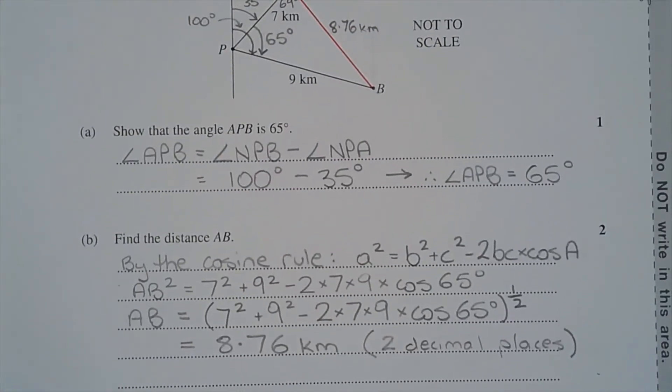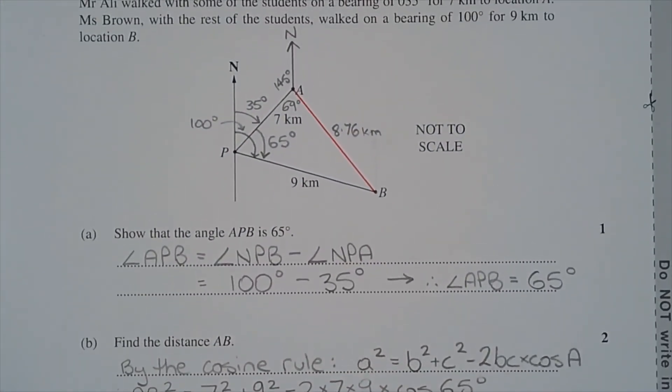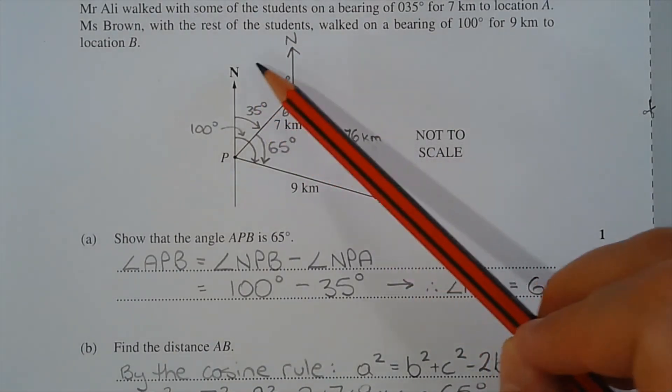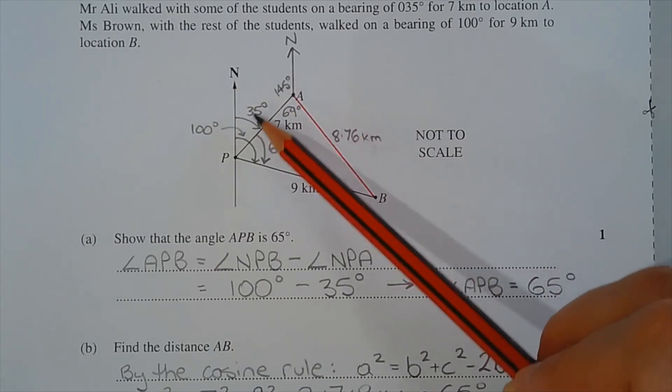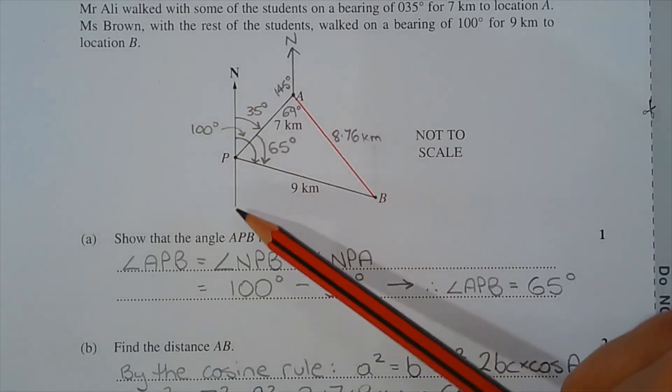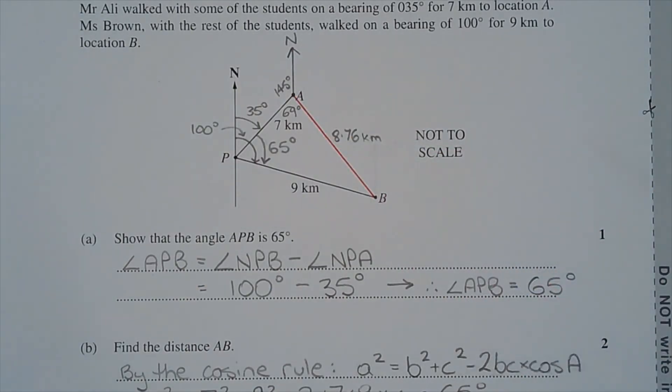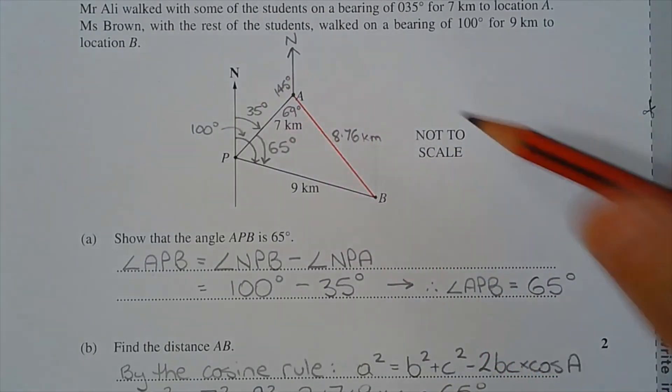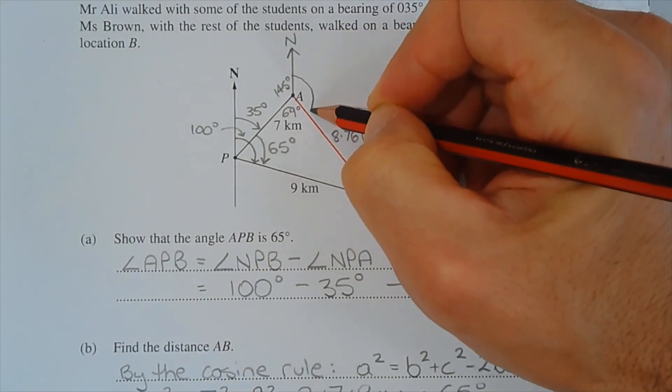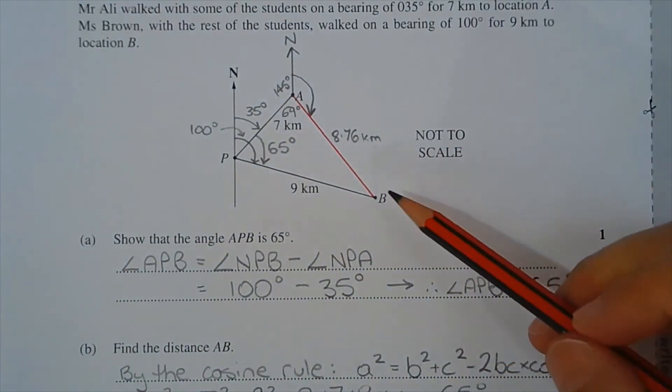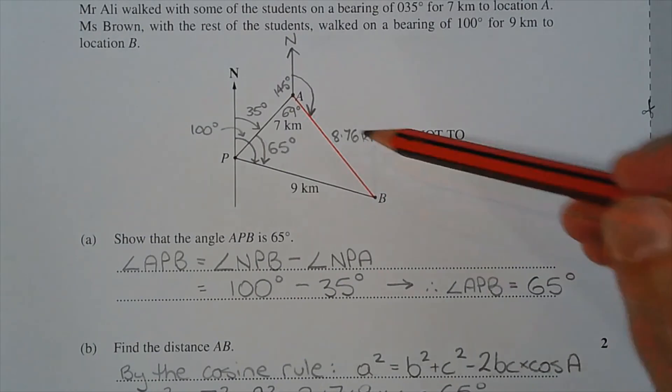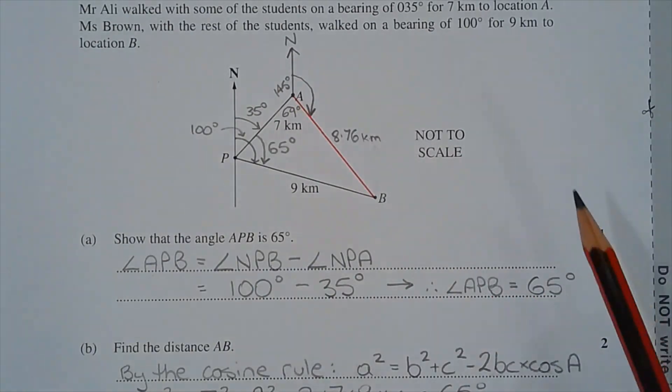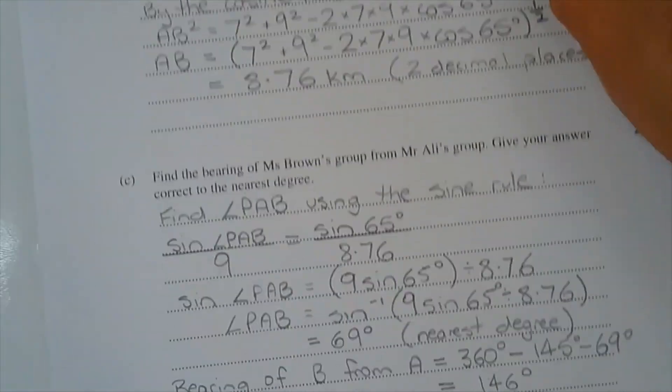We'll have a quick look at the diagram just to see how those sides and angles are placed. So there's angle PAB. Now this angle here, so this 145 degrees, that comes from co-interior angles, since this north-south axis and this north-south axis are parallel. So these two angles are supplementary. So you have 145 degrees, we have 69 degrees, and it's this angle here that is the bearing of Ms. Brown's group from Mr. Ali's group. So angles at a point add up to 360 degrees. So 360 minus 145 minus 69 degrees is equal to 146 degrees.